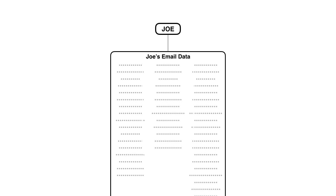So what happens if Joe gets his computer infected? Say he's using an old PC that's out of date, he downloads something he shouldn't, and now his machine is infected — he may not even know it. What's going to happen is that infection, that malware, is going to look at all of his email data and harvest it. It may harvest all that data and send it somewhere else, and Joe's computer doesn't actually do anything further. Or Joe's computer can continue to be the agent that sends out spam.